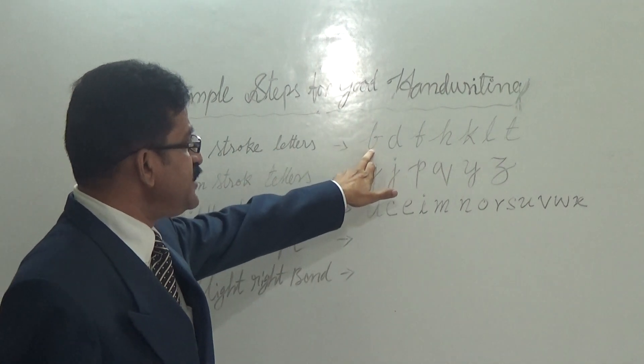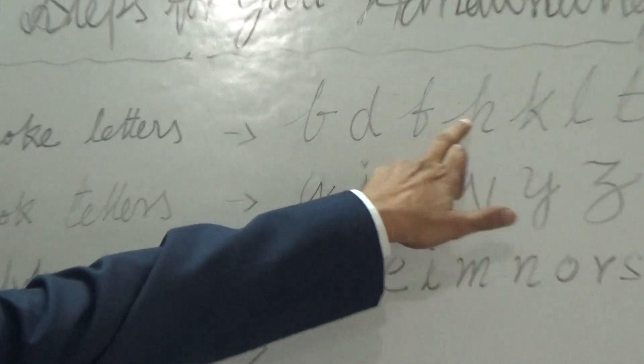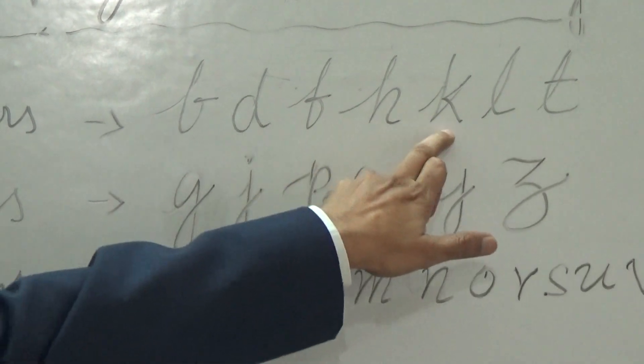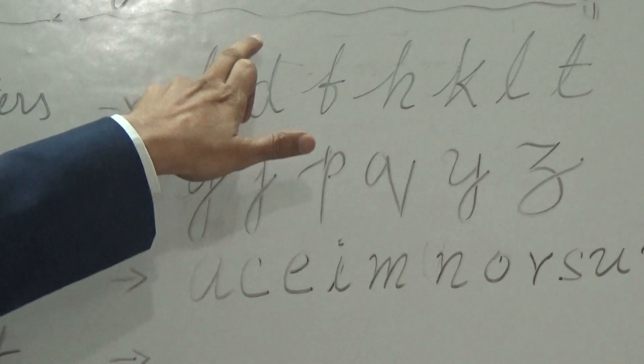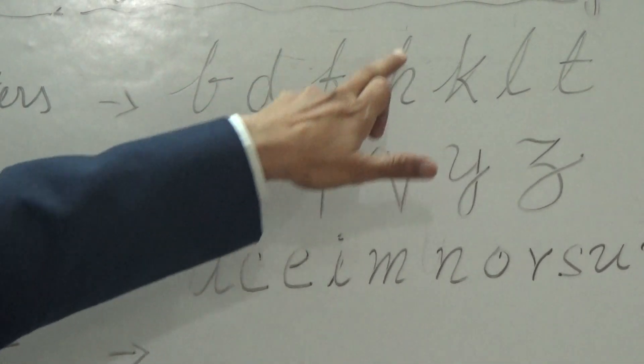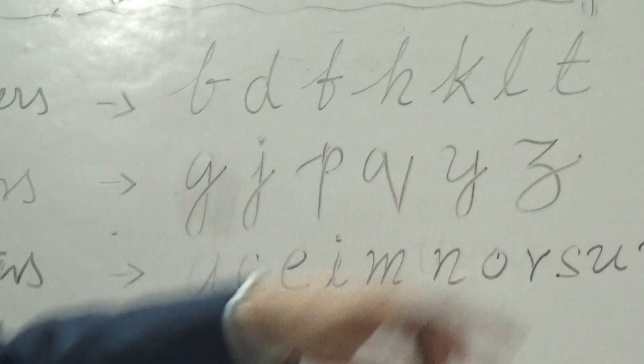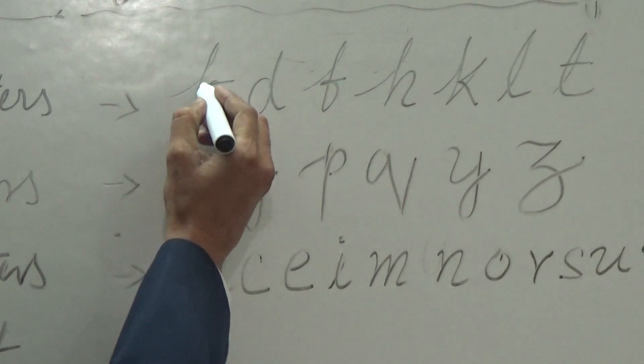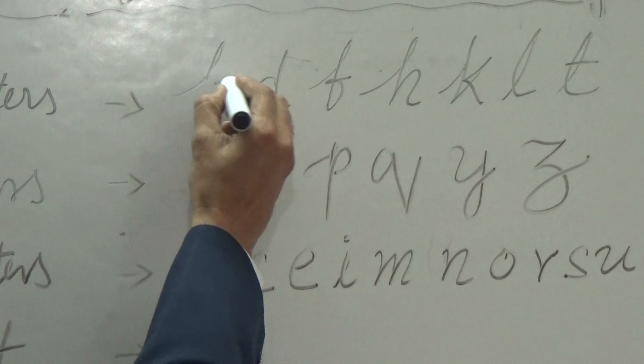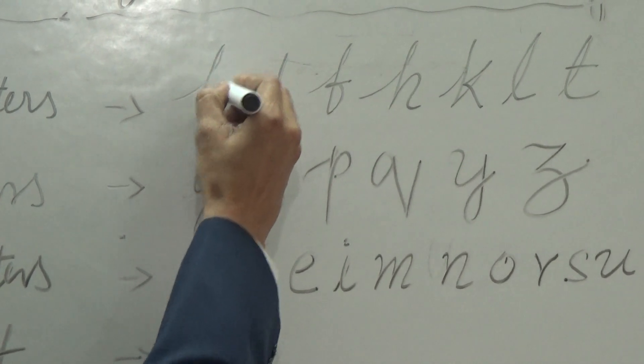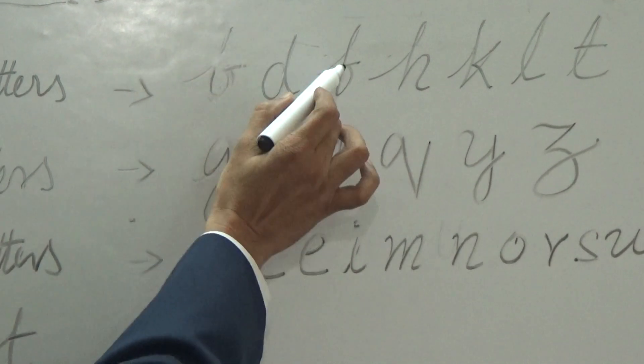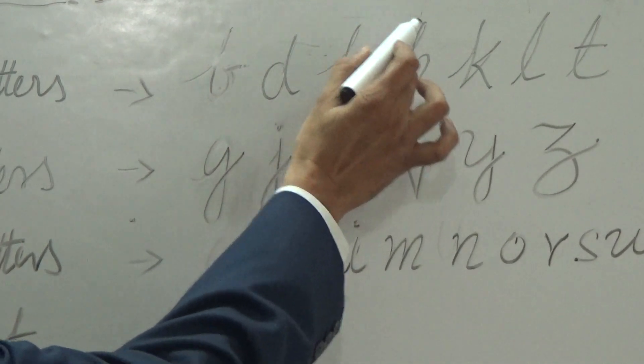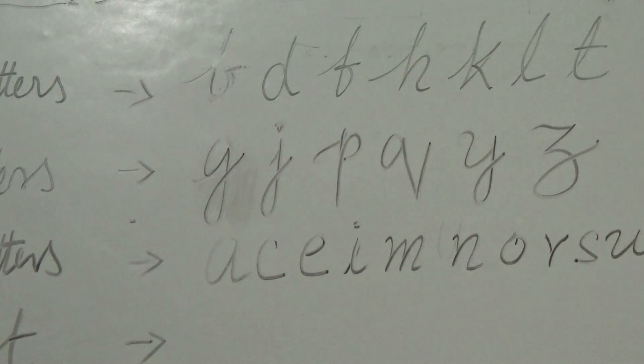For example, B, D, H, F, H, K, L, and T. All these are top stroke or upstroke. For example, every letter is going upstroke. In B, this part of the letter must be in the middle. It goes up. So D, it goes up. F, it goes up. H, it goes up, like that. They may be called upstroke.